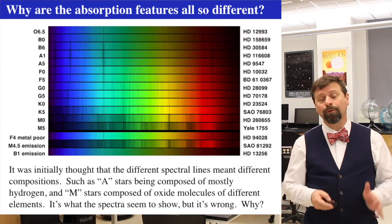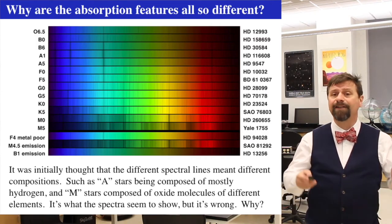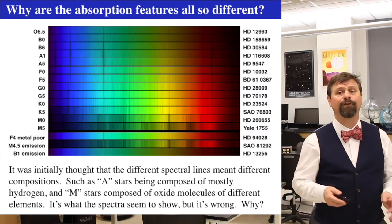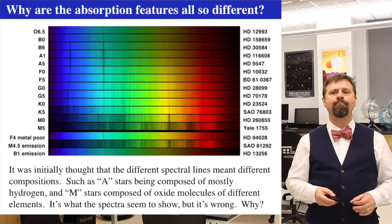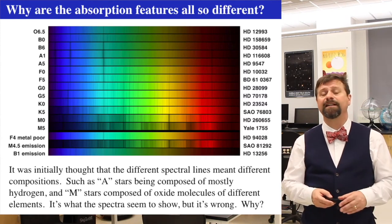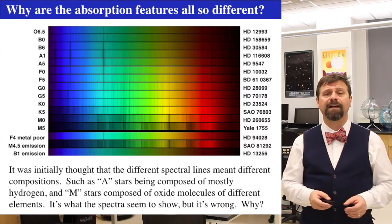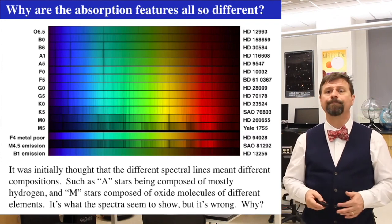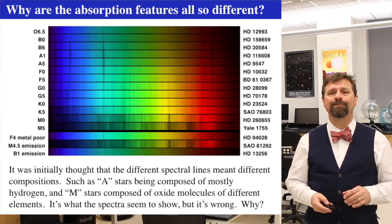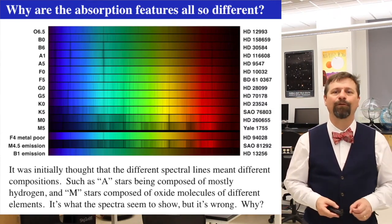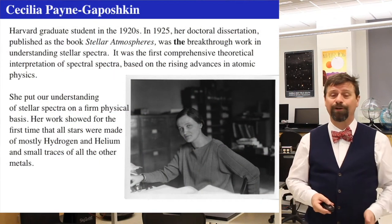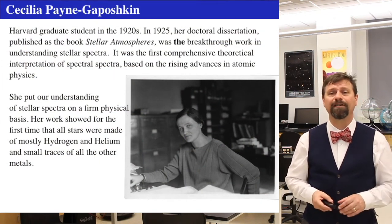That's what was thought for a very long time — that A stars were primarily composed of hydrogen, and M stars' atmospheres were primarily composed of oxide molecules like titanium oxide, vanadium oxide, and carbon monoxide. However, that's wrong. The person who discovered it was wrong was a graduate student at Harvard — one of the computers — named Cecilia Payne-Gaposchkin.